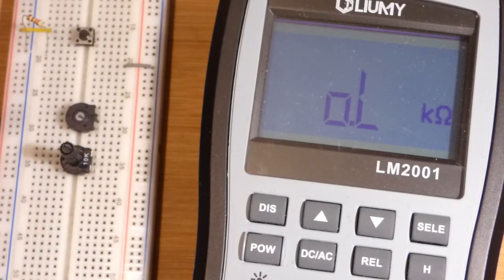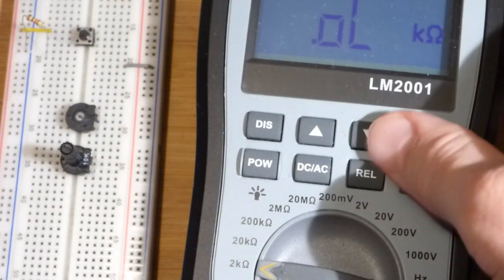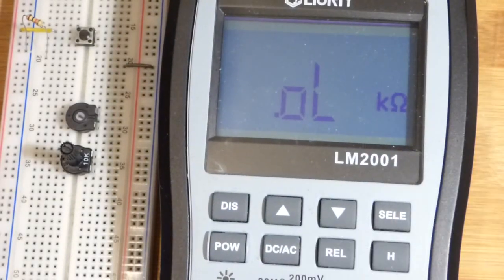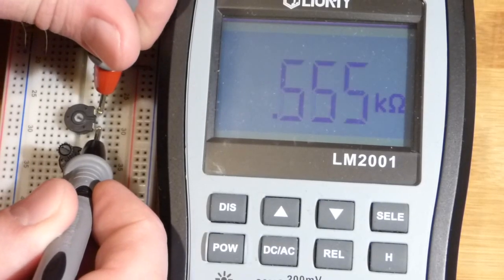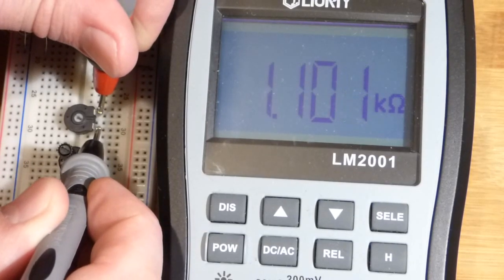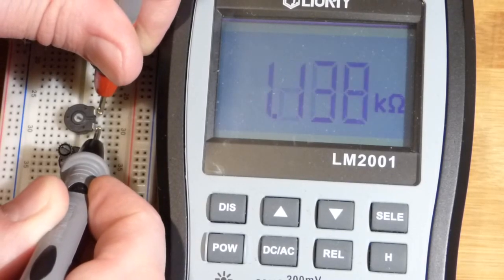And the trim pot up here, you need a screwdriver to set it, but it works exactly the same. The only difference is you're dealing with less resistance. It's a 1 kilo ohm. And again you can see it's about 10% higher than its rated value.